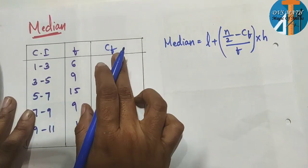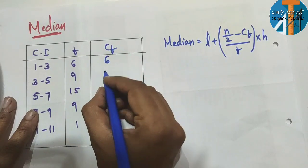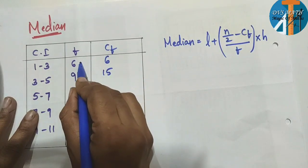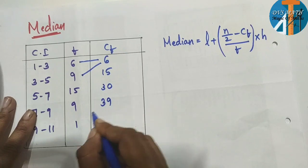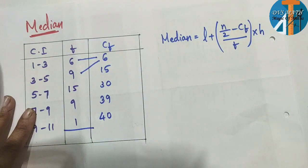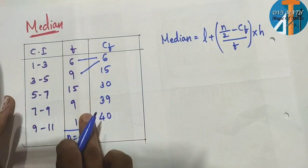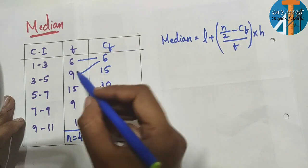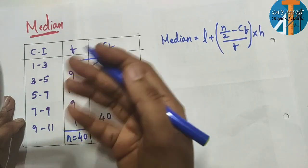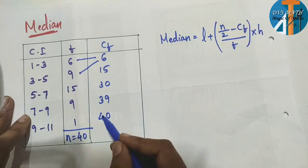Cf is very simple — just add more to the frequency (cumulative sum). 6; 6+9=15; 15+15=30; 30+9=39; 39+1=40. So σf = N = 40, and the last Cf value matches N. These two are matching.